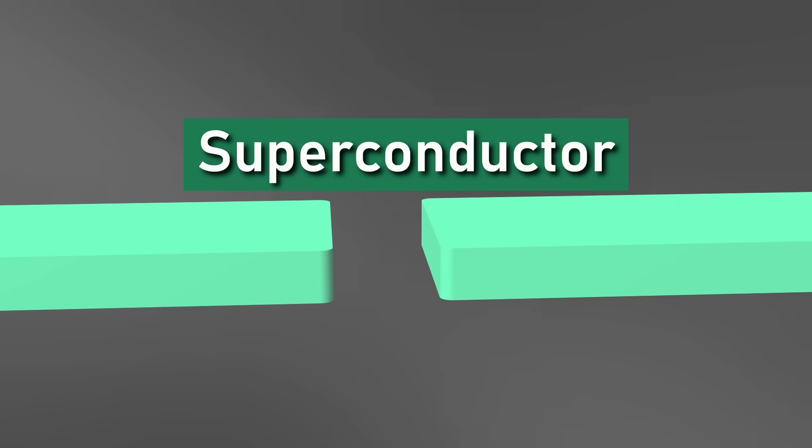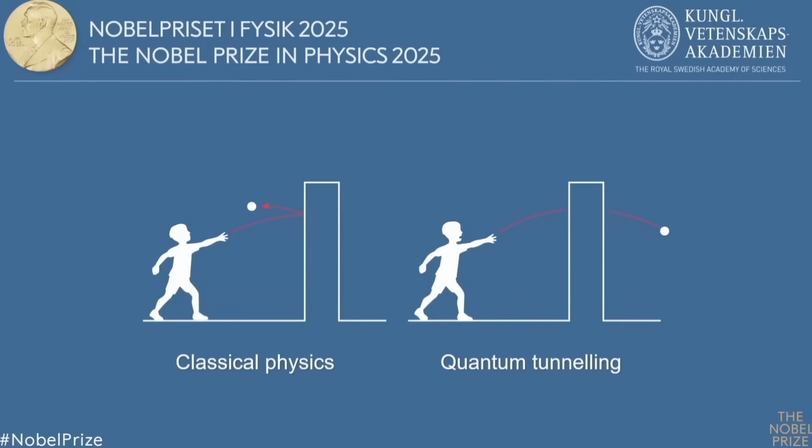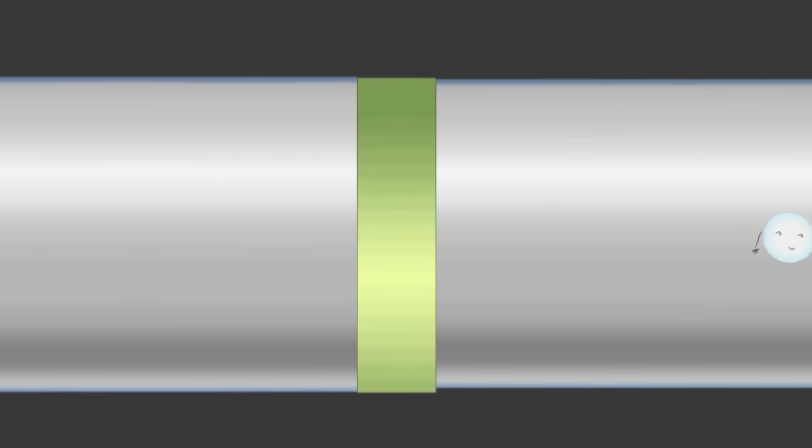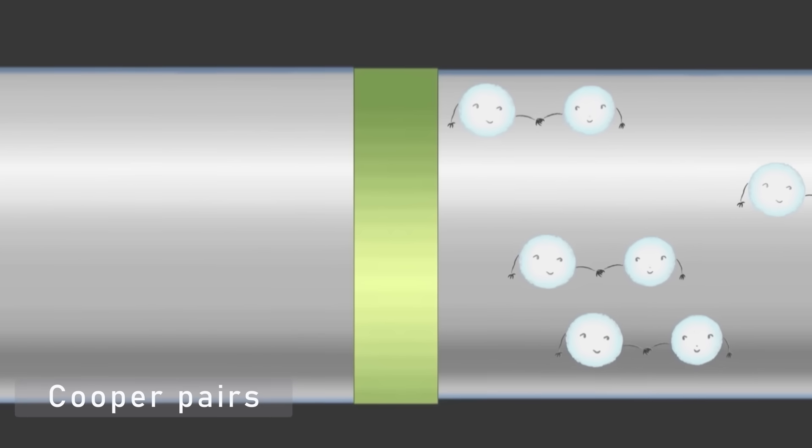Imagine two superconductors, materials that let electrons flow without resistance, separated by a whisper-thin layer of insulator. Classically, no current should pass through that barrier. But quantum mechanics disagrees. In superconductors, electrons don't move individually. They form Cooper pairs, linked twins, that act as a single quantum wave.